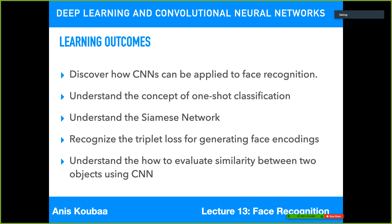Regarding the learning outcomes, you will discover how convolutional neural networks can be applied to face recognition, which is quite different from previous object classification and detection algorithms. You will understand the concept of one-shot classification — being able to classify using only one instance of an object — as well as the concept of Siamese networks, triplet loss for generating face encodings, and how to evaluate similarity between two objects using convolutional neural networks.